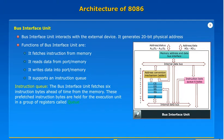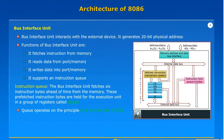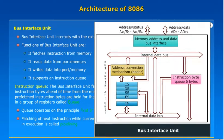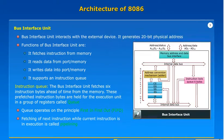Instruction queue. The Bus Interface Unit fetches six instruction bytes ahead of time from the memory. These pre-fetched instruction bytes are held for the execution unit in a group of registers called a queue. The queue operates on the principle of first in, first out — FIFO. Fetching of the next instruction while the current instruction is in execution is called pipelining.